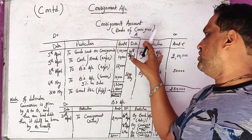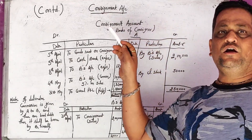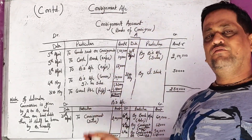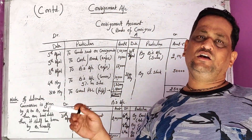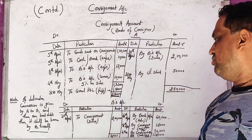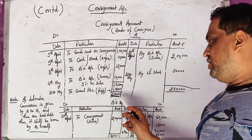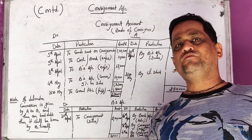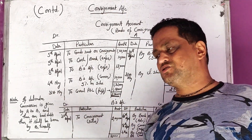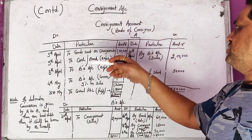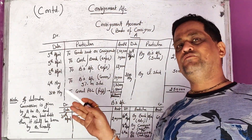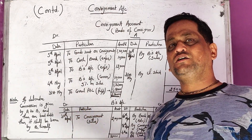We are now working with the consignment account in the books of the consignor. The consignor has to prepare the consignment account to check whether he has incurred profit or suffered loss. We prepare the books of A, which includes the consignment account and consignee's account. In the consignee account, we check what amount is to be received from consignee B. In examinations, they often ask us to prepare direct ledger accounts.